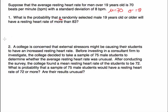So I'm going to draw my bell curve here. In the middle is going to be my mean, and I have an observation of 83 or more. So here's 83, and I want to know what percent of males 19 years or older will have a resting heart rate above that. This is a problem we've already seen before — what I need to do is calculate the z-score associated with 83.